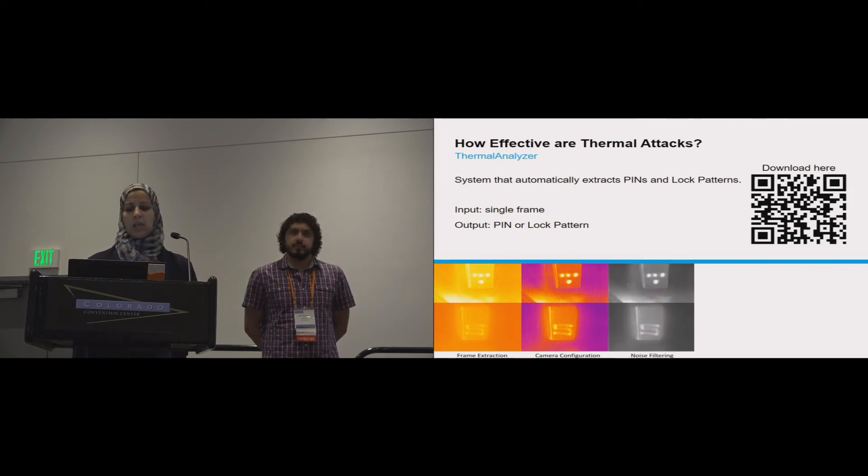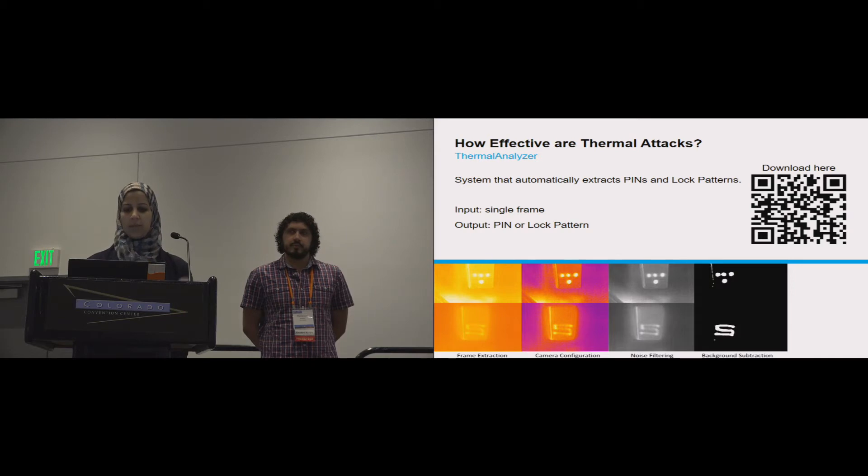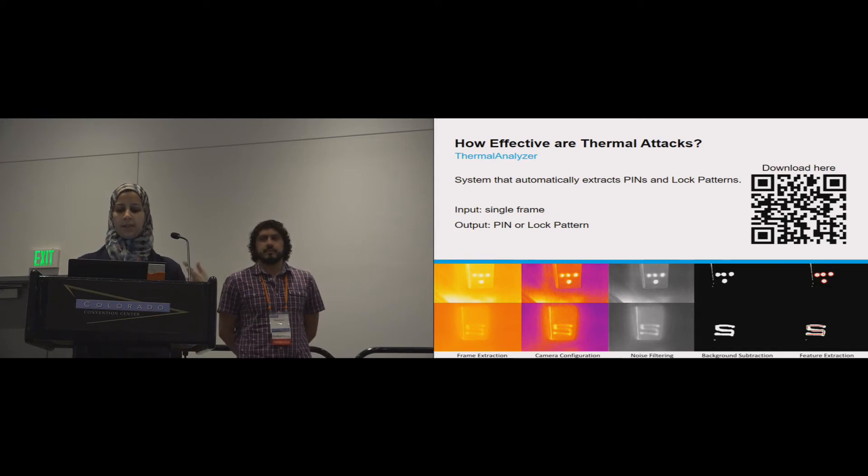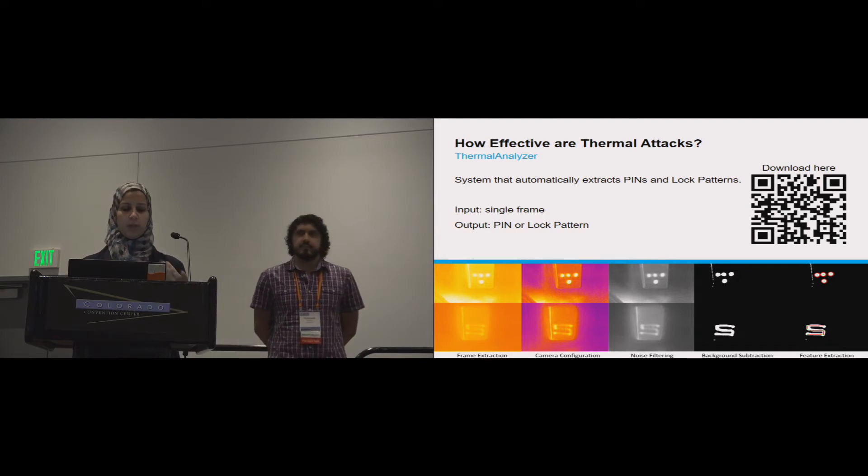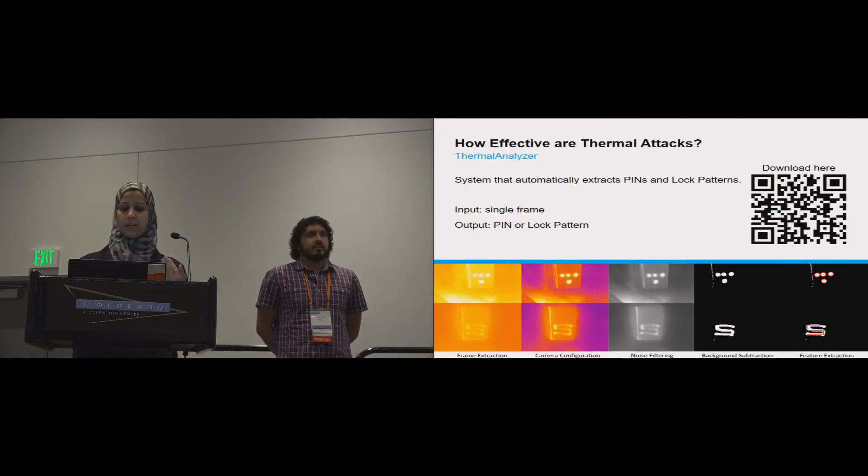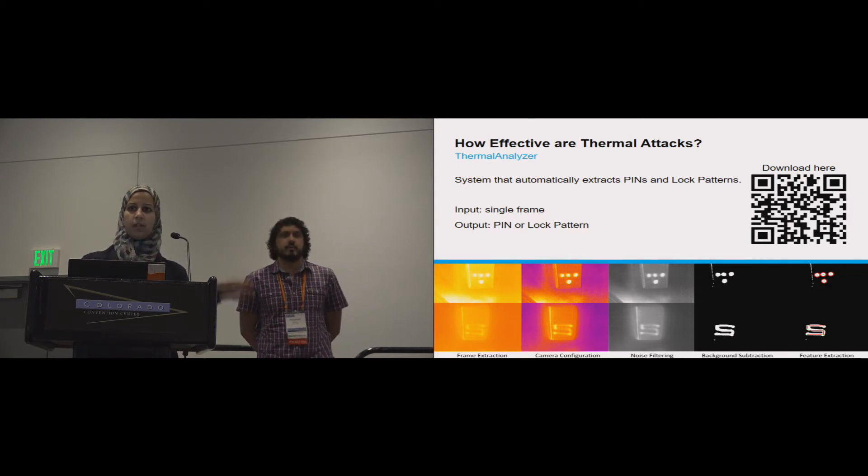Additionally, we do some noise filtering and background subtraction, and then we end up with only the entry, or where the user has pressed. We do contour fitting—circular for the PINs, lines for the patterns—and then this is for the visual part. Additionally, we use the temperature information in order to sort them to know which PIN was entered first. Based on the temperature information distribution, we can actually know if there is a PIN that has been pressed twice or if it's been pressed the first entry or the last entry based on temperature distribution.